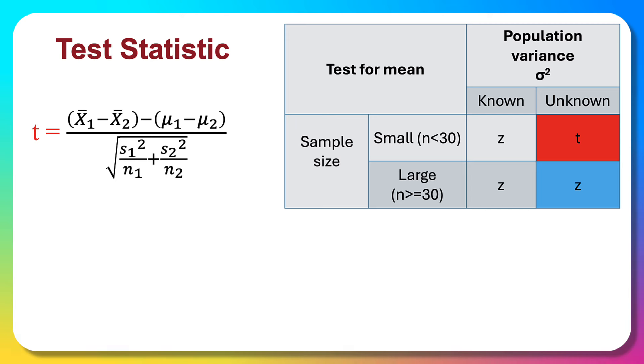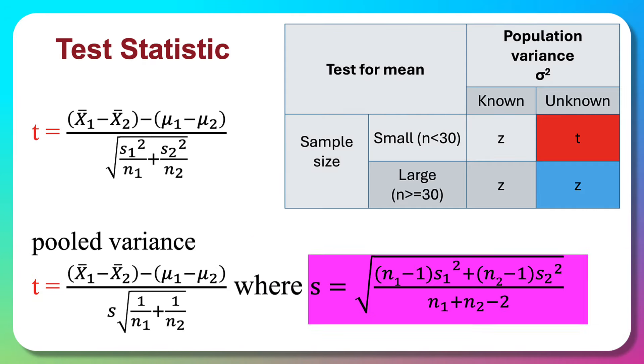In the t-test, there are different cases to consider. Basically, we examine whether the population variances are equal. If we assume the population variances are the same, we can use pooled variance. That means we combine the two sample variances S1² and S2² into a single pooled variance S².